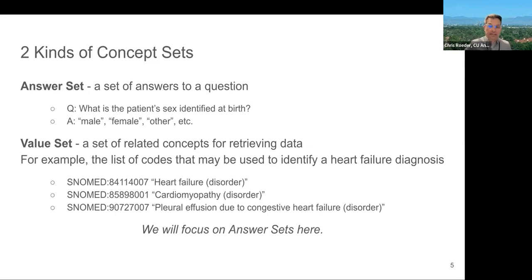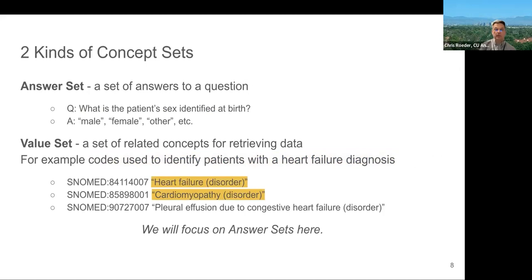A value set, on the other hand, is a set of related concepts for retrieving data, not so much constraining the data. So you may want to retrieve patients that have heart failure out of an EMR or an OMOP instance. And here's a set, a partial set of terms that I found to do that. We have heart failure, cardiomyopathy, and interestingly, pleural effusion due to congestive heart failure.